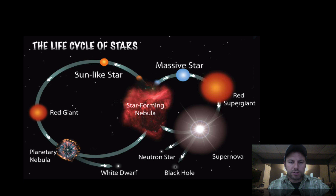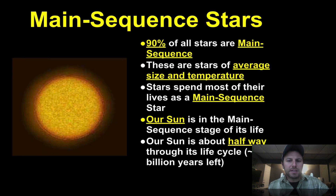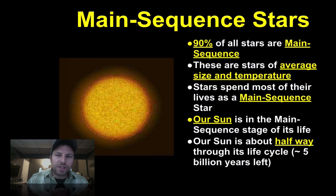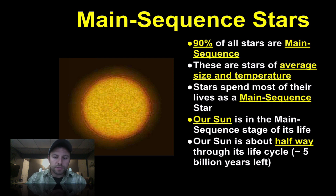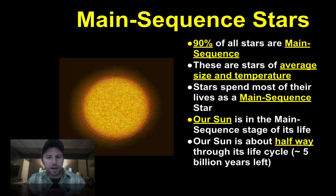So once we have a nebula established, it is now up to gravity to bring it together and start getting either massive stars or stars like our sun. Main sequence stars like our sun are pretty much the average of stars — this is what we typically see out in space. Stars spend most of their time as main sequence stars. Our sun is a main sequence star and is about halfway through its life cycle, having been fusing hydrogen for five billion years and able to do so for another five billion years.